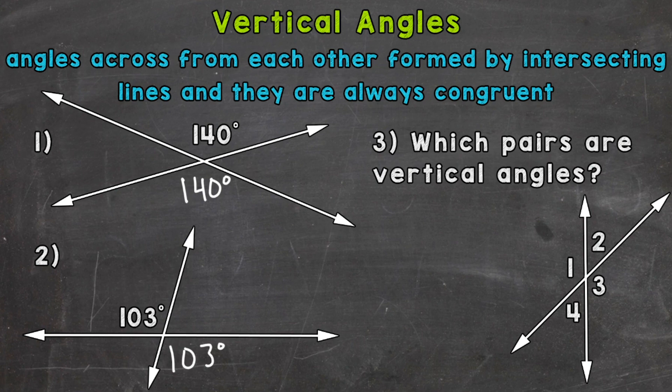And lastly number three which pairs are vertical angles. So we have two pairs here that we need to pick out from the angles given one, two, three, and four. And we'll start with angle one.